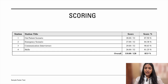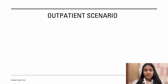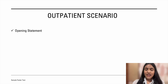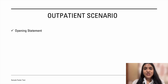This is what the score sheet looks like, and these are my scores just for your reference. Let's start with the outpatient scenario. Firstly, you need to have a very good opening statement as this is the first impression that you give to your examiners — for example, in a hematuria scenario.